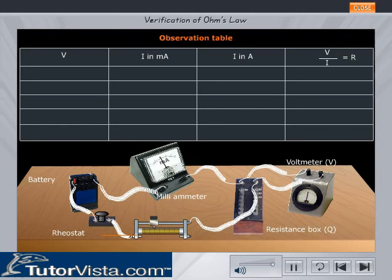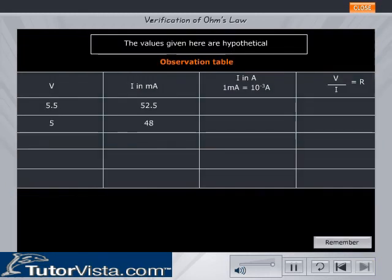Record the values of V and I in the observation table. Now vary the position of the slider of the rheostat and record V and I. Record at least five values of V and I by adjusting the position of the slider of the rheostat.